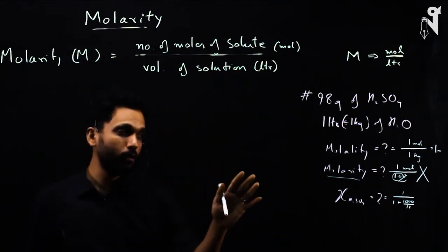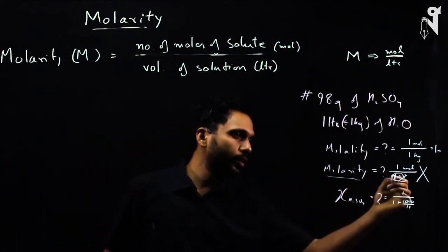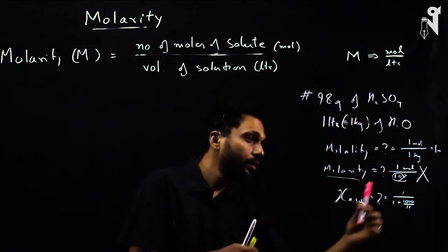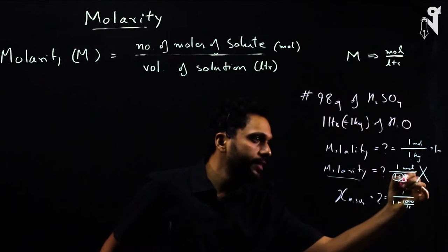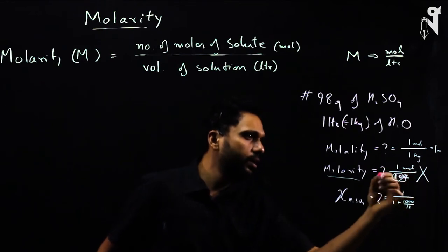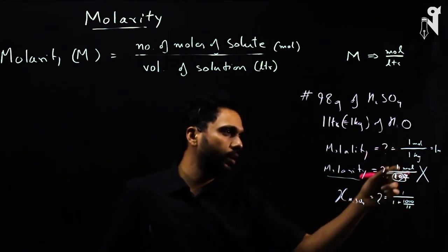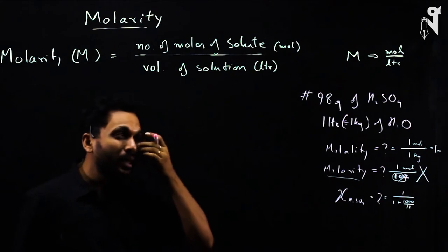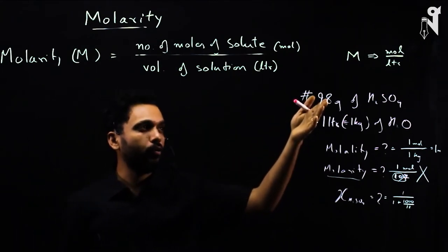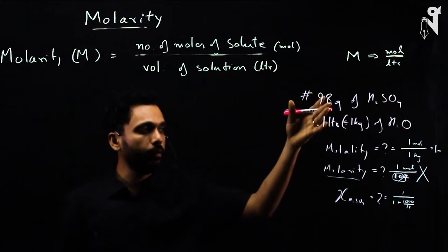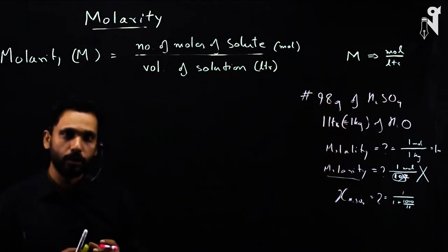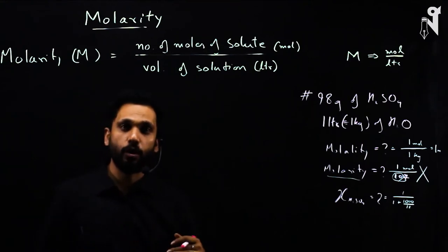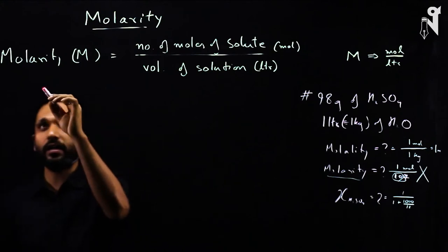You see, when the volume of water and the volume of solution are almost the same, your molality and molarity answers will be almost the same. For example, if the volume of solution was 1.07 liters, then 1/1 and 1/1.07 are close but not exactly the same. The more solute you add, the more the volume of solution changes from the volume of the solvent, and then molality and molarity won't be the same.